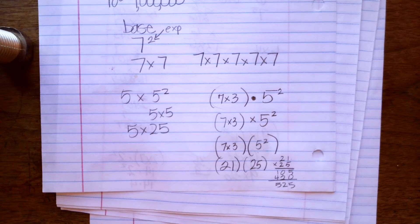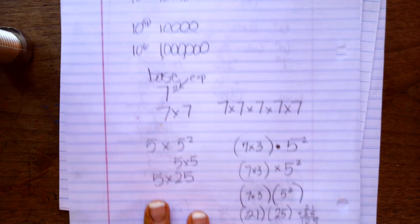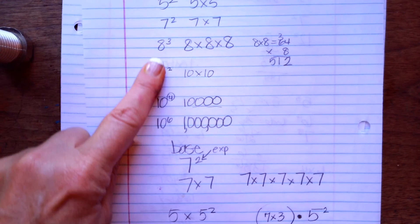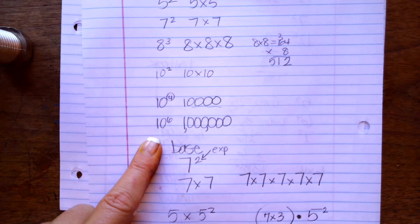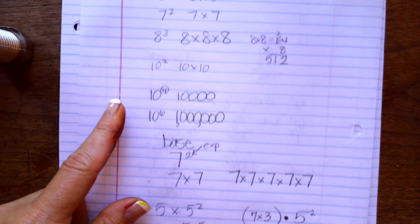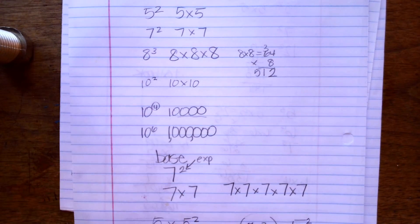So those are the three things that you're going to see. You're going to see it as just a base with an exponent, which means that you're multiplying the base as many times as the exponent tells you to.